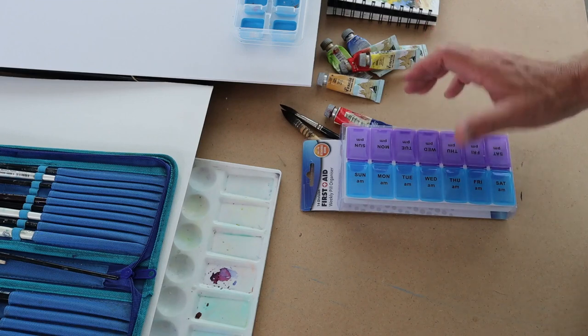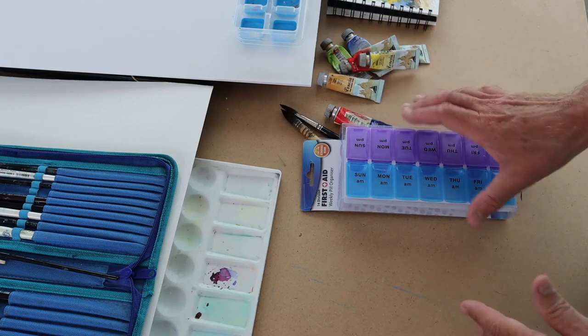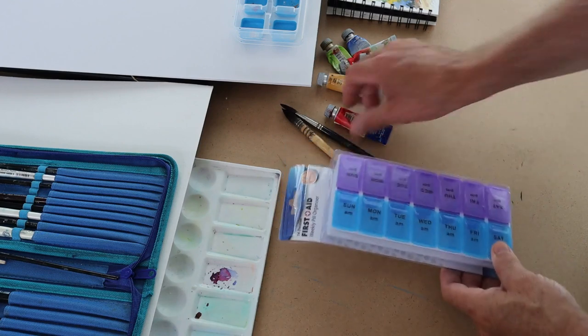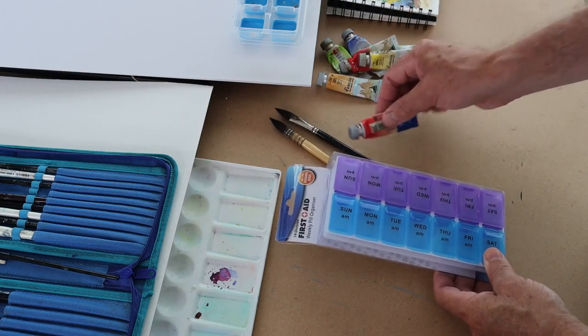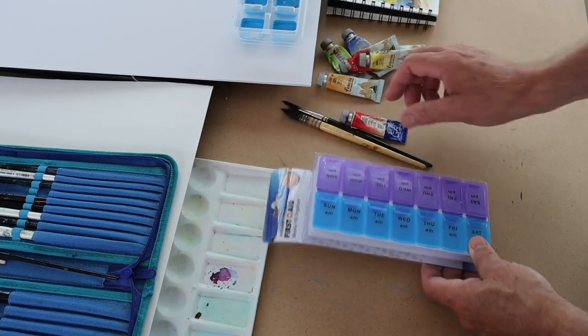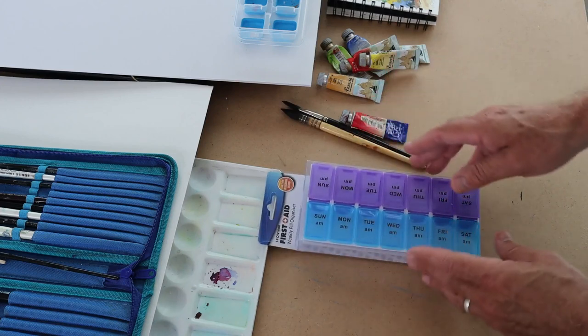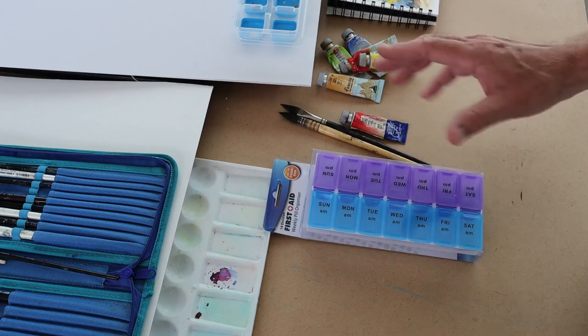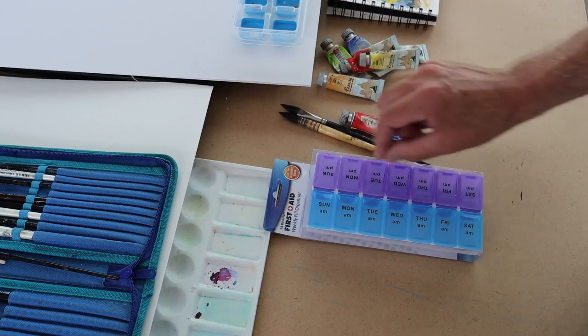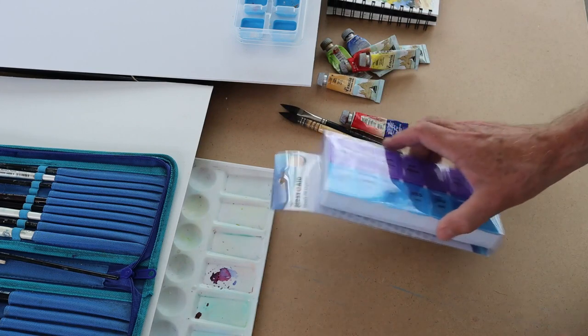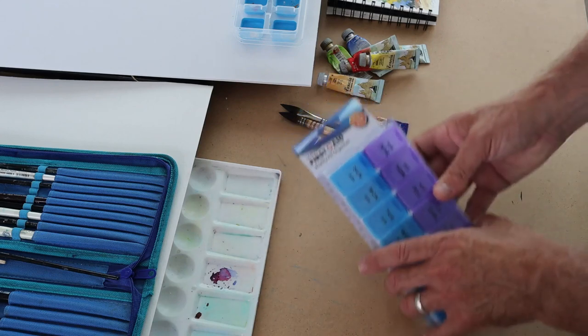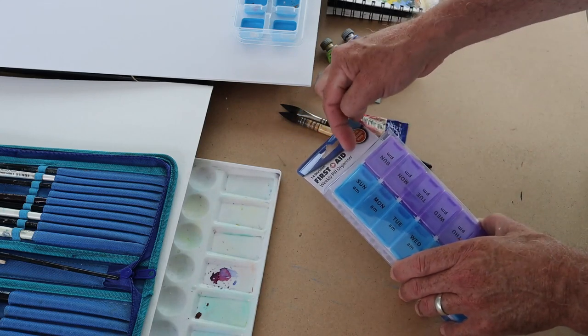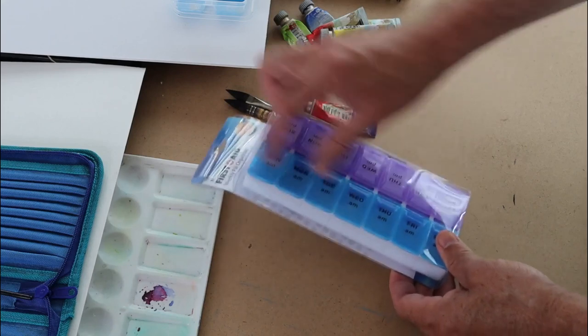Here's an inexpensive tip for making a pan set for your watercolors. If you've got tube watercolors like this and you want to transport them around ready to use very quickly, or maybe you want to use your gouache paint and put them in pans like this. This is, in fact, a pill organizer to put your pills in.